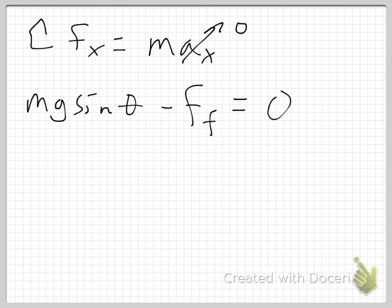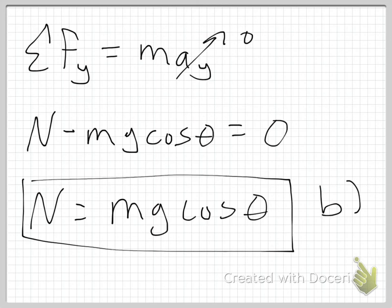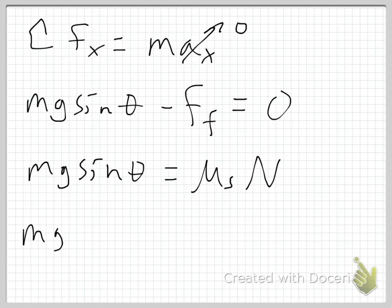If I rearrange this, I get Mg sine of theta is equal to the force of friction. But I know that the force of friction is mu static times the normal force. And what is the normal force? It is this. I've already solved for that, Mg cosine of theta. So I get that Mg sine of theta is equal to mu static times Mg cosine of theta. Alright, I'm going to have to stop this video because of time limits on YouTube, so I will pick up here in the next video. Thank you.